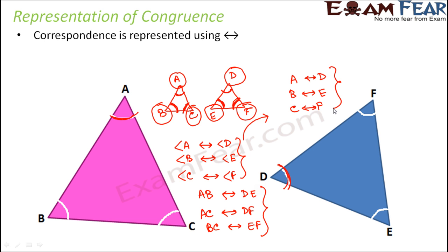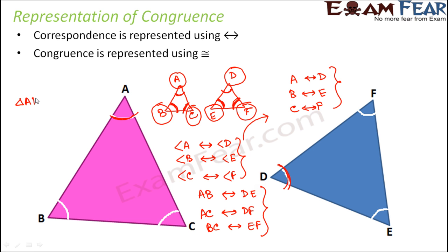In fact, these corresponding sides or angles only decide whether two triangles will be congruent or not. And how do we represent congruence? Congruence is represented using this symbol — an equality sign with a curve on top of it. So if I want to say that triangle ABC and triangle DEF are congruent, we write it like this: triangle ABC is congruent to triangle DEF. So these are basically two new symbols that you have learned — one symbol is for correspondence and the other symbol is for congruence.